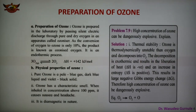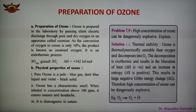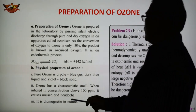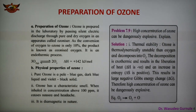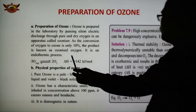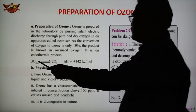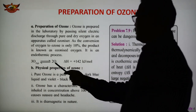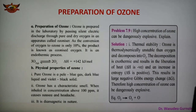One more important compound is the preparation of ozone. Ozone has the formula O3 — it is the allotropic form of oxygen. Ozone can be prepared in the laboratory by passing an electric discharge through pure dry oxygen in an apparatus known as an ozonizer. The conversion of oxygen to ozone is only 10%, and the product is known as ozonized oxygen. This is an endothermic reaction process.